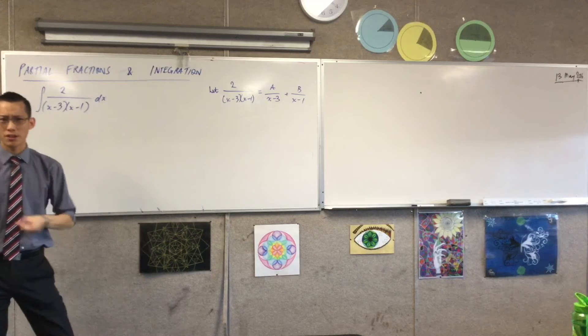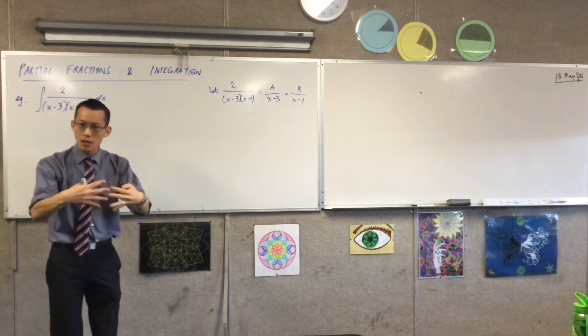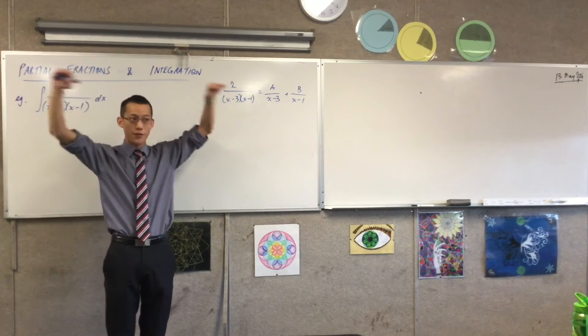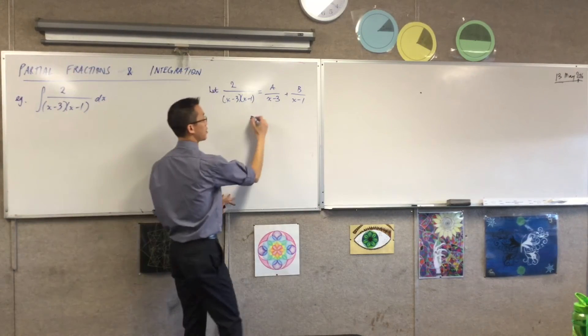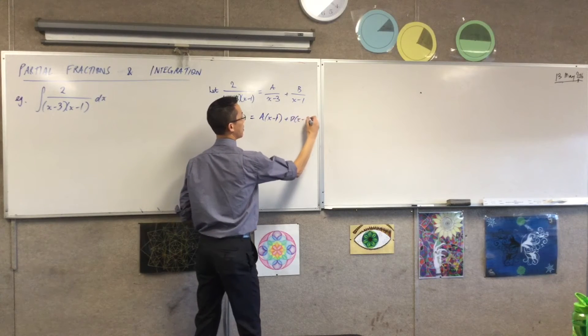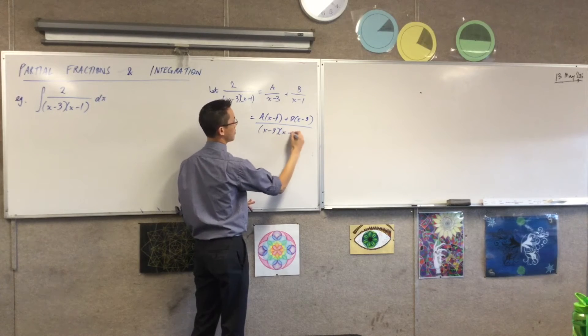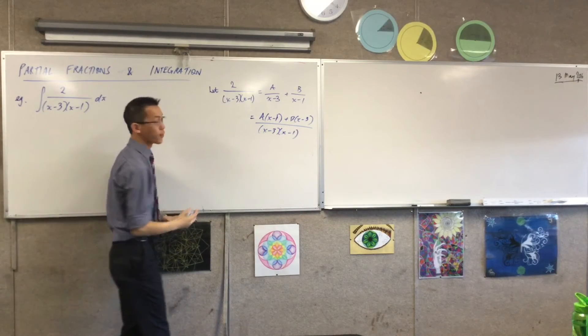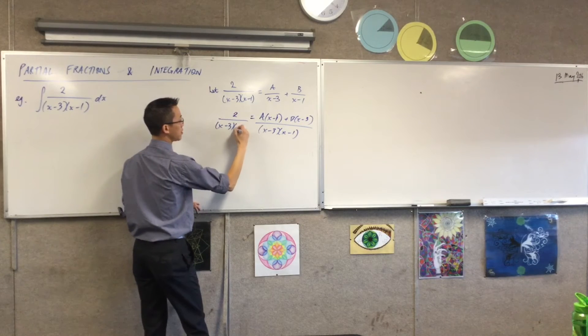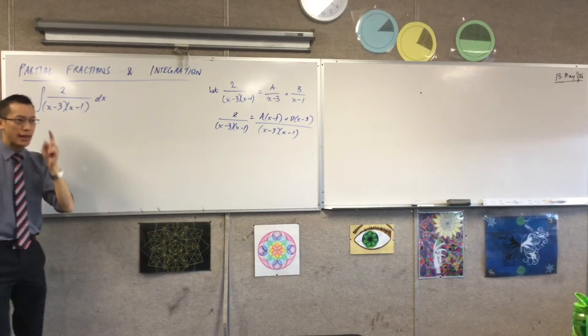So now what do I do with that? Where am I going to go? I want to combine these, because if I get the denominators the same, then I can compare the coefficients on the numerators. So this is how it's looking.